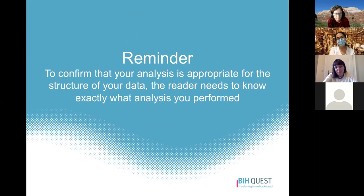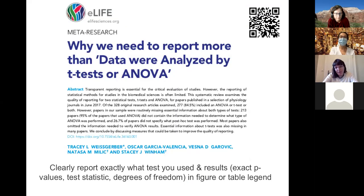Readers need to know exactly what analysis was performed to confirm it's appropriate for your study design. Meta-research found that basic science papers often have a two-sentence statistics section saying data were analyzed by t-test or ANOVA 'as appropriate' and significance defined as p less than 0.05. Detailed assessment often revealed missing information needed to determine what type of t-test or ANOVA was used, making it impossible to evaluate whether the statistics were appropriate.